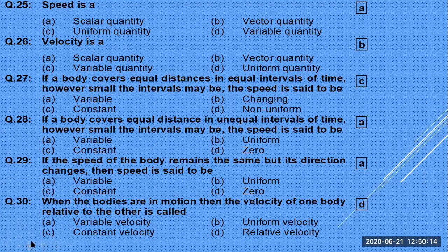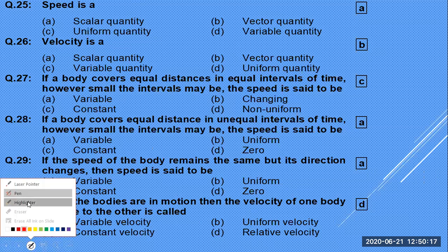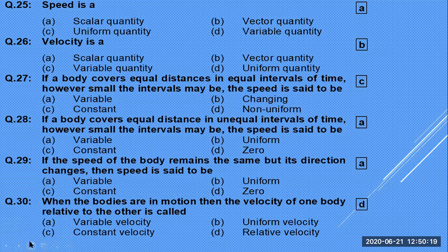If the speed of a body remains the same but its direction changes, then the velocity is said to be variable — because velocity depends on direction. When two bodies are in motion, the velocity of one relative to the other is called relative velocity.